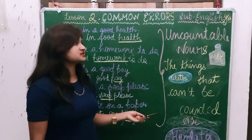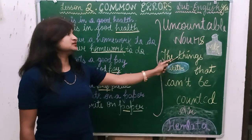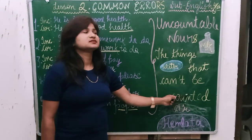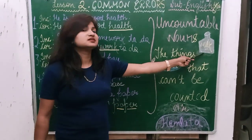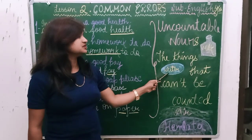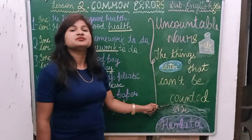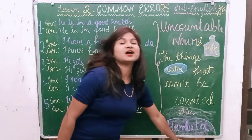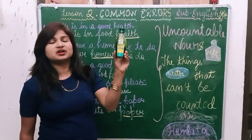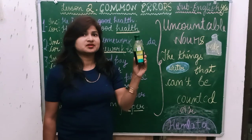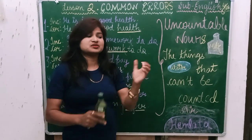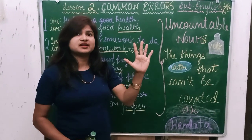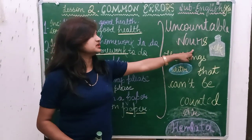You must have read in your previous classes what is an Uncountable Noun. Uncountable Nouns are things that we can't count — like milk and water, we can't count those. I have a bottle here; this is oil, and oil is also uncountable. But things we can count, like fingers: 1, 2, 3, 4, 5 — you can count those. That is countable. But today we are talking about Uncountable Nouns.